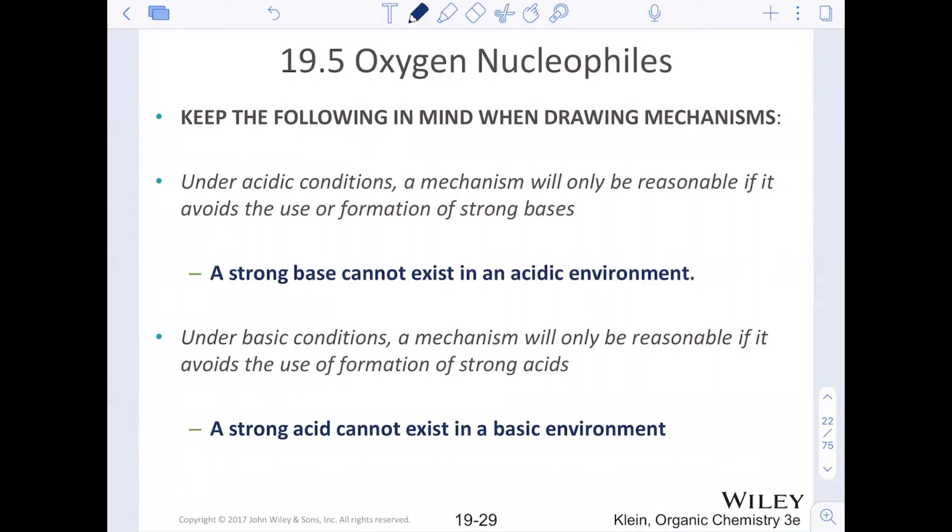Now, when drawing these mechanisms, it's really important to stop right now, go back and look at your mechanisms. Under acidic conditions, mechanisms will only be reasonable if it avoids the use or the formation of strong bases, so we should not see oxygen minuses. A strong base cannot exist in an acidic environment, and the exact opposite is true for basic conditions. In a mechanism with basic conditions, it's only reasonable if it avoids the use or the formation of a strong acid. A strong acid cannot exist in a basic environment. So minuses stay with the bases, and pluses stay with the acids.